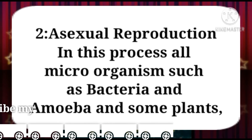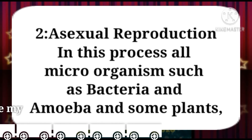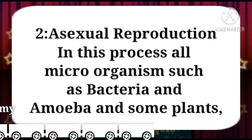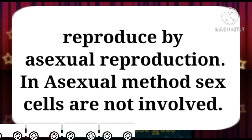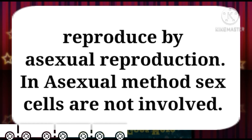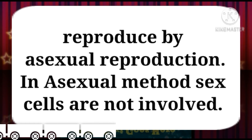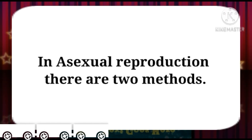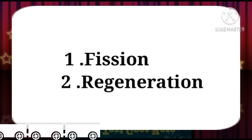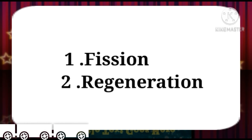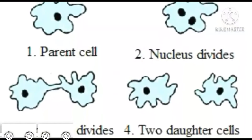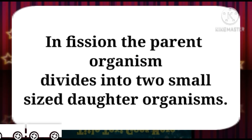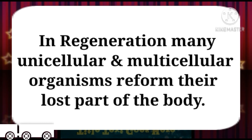Number two is asexual reproduction. In this process, all microorganisms such as bacteria, amoeba, and some plants reproduce by asexual reproduction. In asexual reproduction, sex cells are not involved. There are two methods: number one is fission, and number two is regeneration. In fission, the parent organism divides into two smaller daughter organisms.